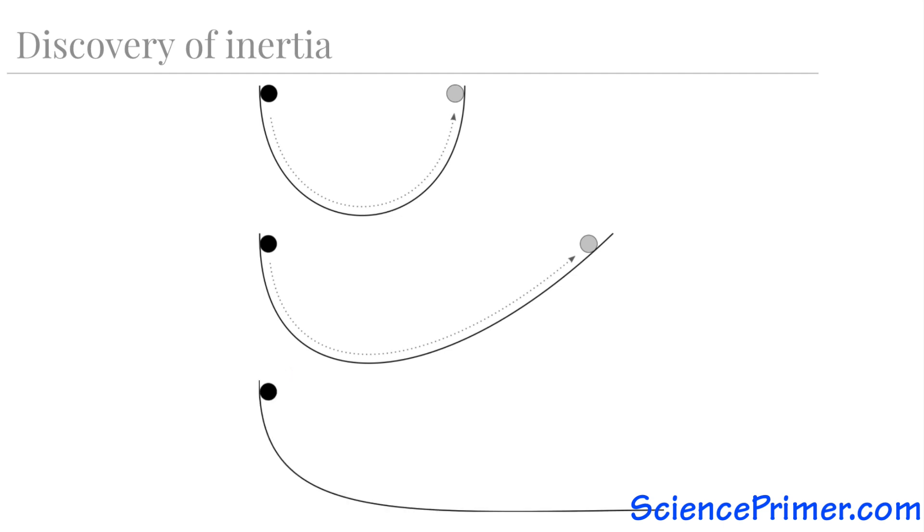By extending this to an extreme case where one side of the bowl is flat, we get a scenario that illustrates inertia. When a ball is released in this scenario, it rolls down to the level, frictionless surface, and then rolls to the right forever, or until it's acted on by another force. This is how Galileo was able to create a thought experiment based on observations he made in the real world to demonstrate the existence of inertia.